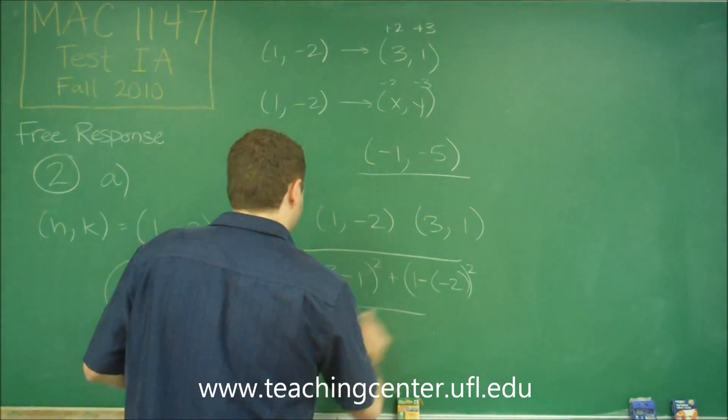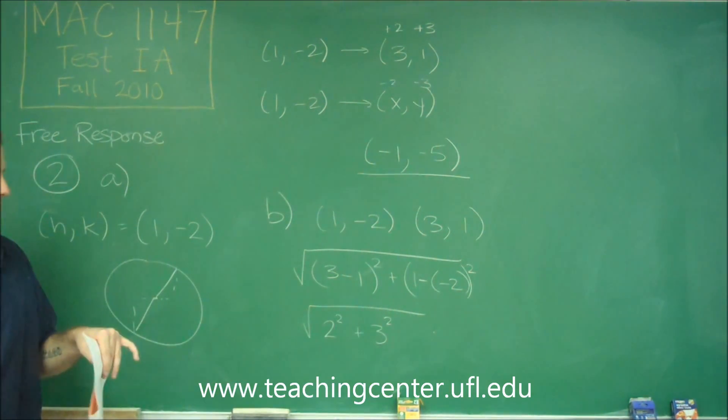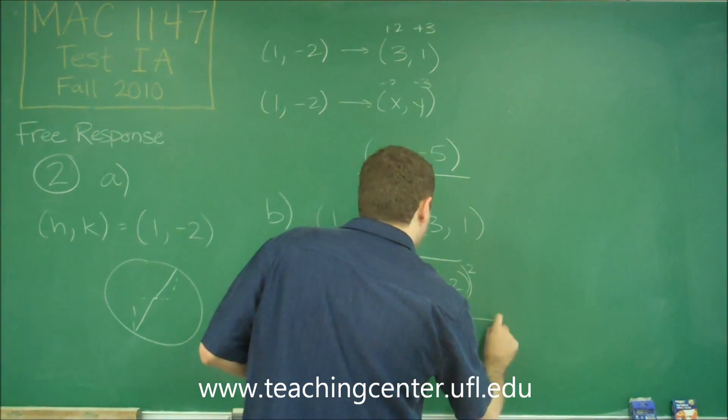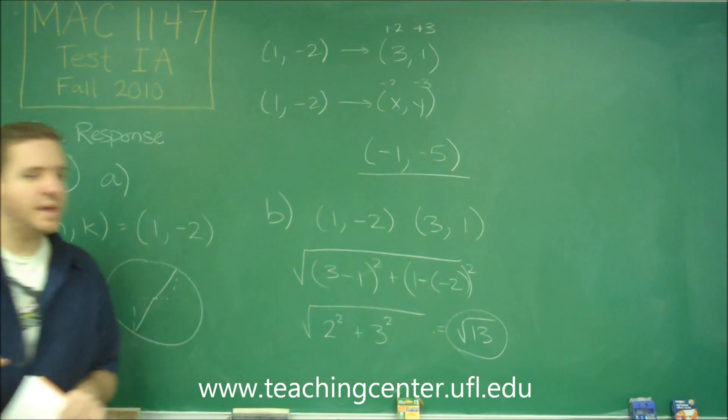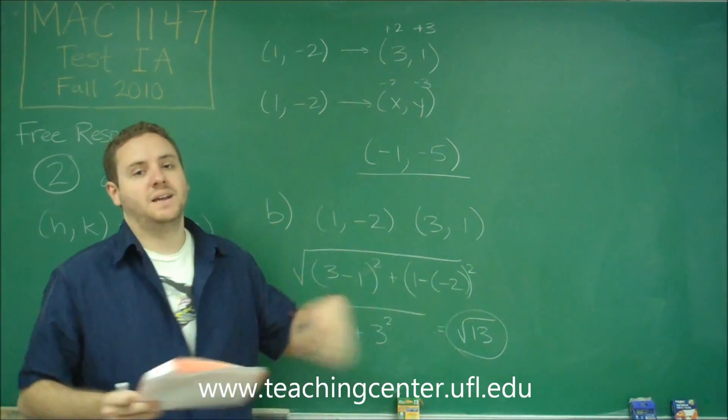So here we get square root of 2 squared plus 3 squared. So we have 4 plus 9, which is square root of 13. So that's going to be our radius, distance from the center to the edge of the circle.